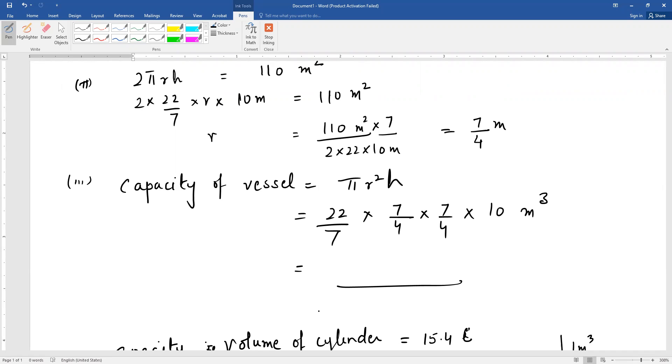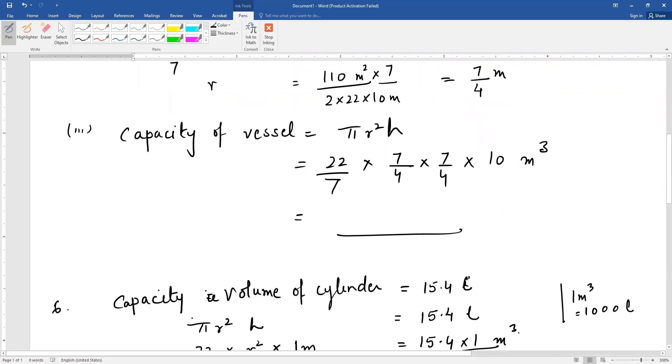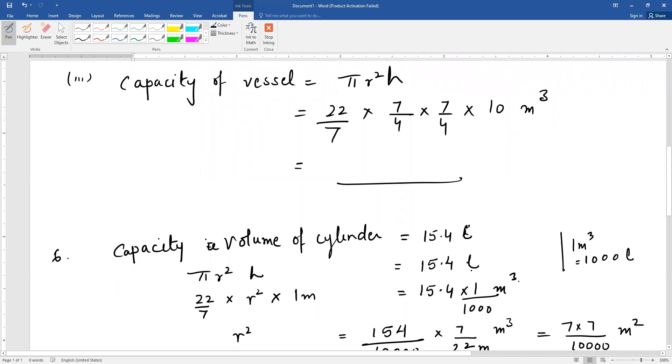Capacity 15.4 liters means πr²h equals 15.4 liters. The height is given as 1 meter, so we need to convert 15.4 liters to cubic meters. The conversion is: 1 meter cube equals 1000 liters, so 1 liter equals 1/1000 meter cube.